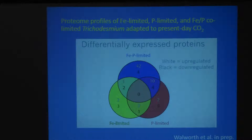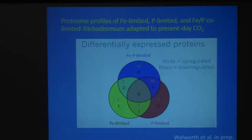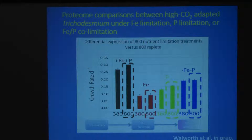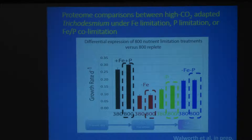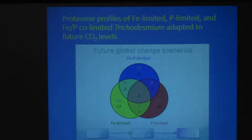It's different from iron limitation and different from phosphorus limitation. Let's compare now between the high CO2 adapted cultures. Here are the ones grown at 750 or 800 ppm, and we'll compare across these treatments. Here's the same Venn diagram treatment.